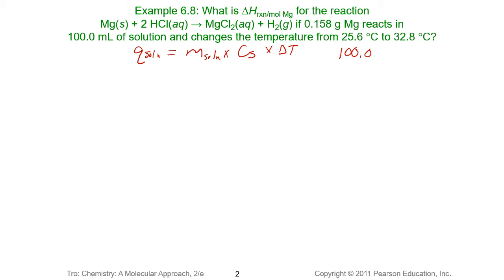Because this reaction happens in water, the vast majority of our solution is water, so we are going to assume that the density of our solution is the density of water. This is an assumption, but most of the time it is a very valid one. If you are given a density, you should use that instead. Because we're assuming it's water, the density is 1 gram per milliliter, which means we have 100 grams of solution.